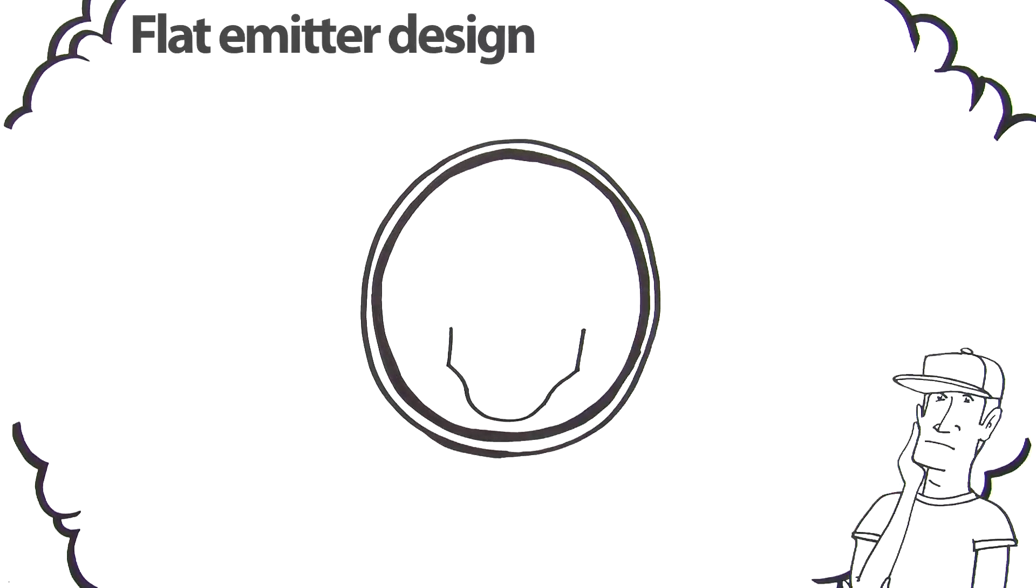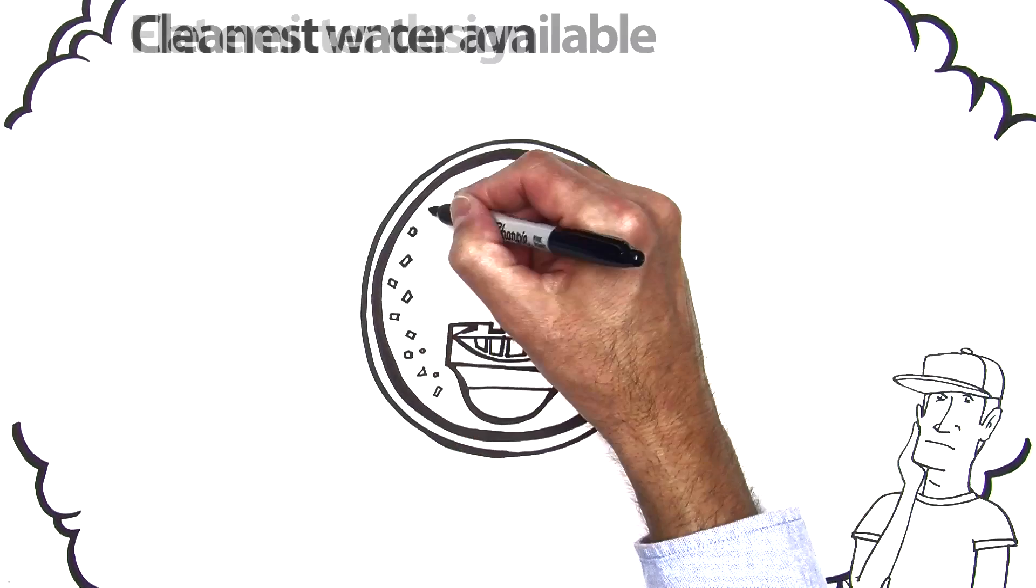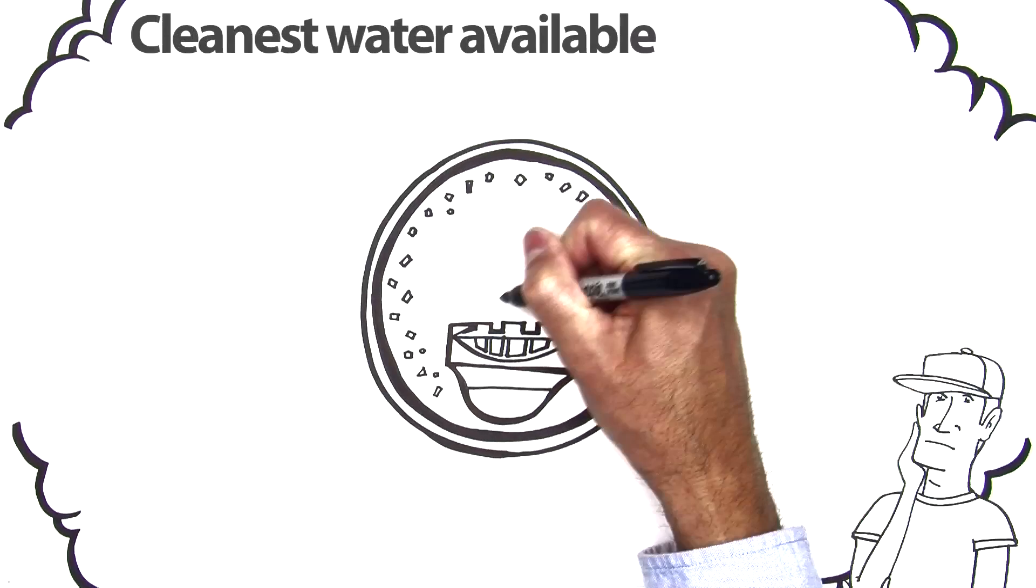You'd start by giving it a low profile so it could handle the dirtiest water. Most grit would flow around the emitter and only the cleanest water would go in.